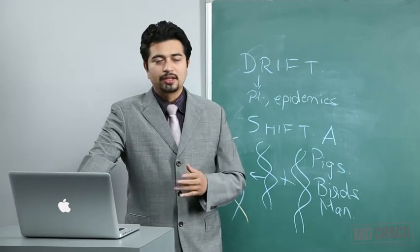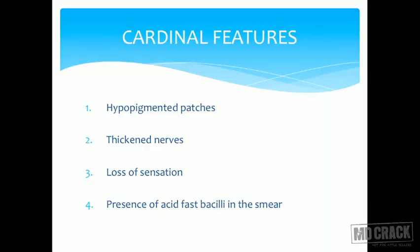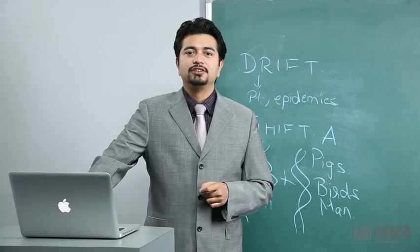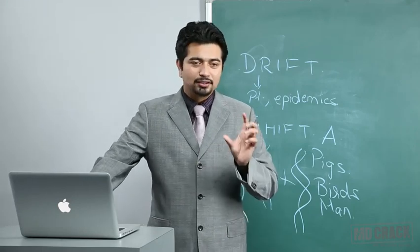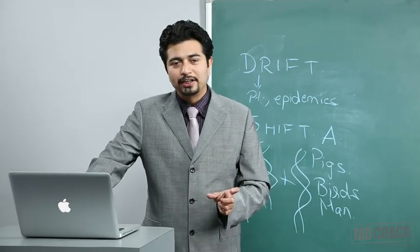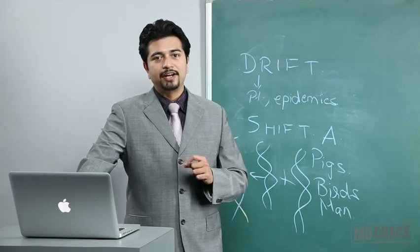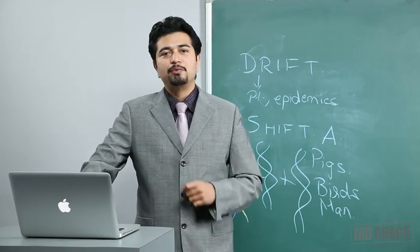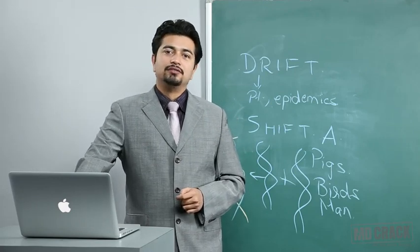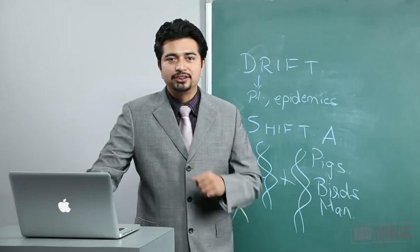The cardinal features of leprosy — highly testable — are: hypopigmented patches, thickened nerves, loss of sensation in the area of the nerve, and presence of acid-fast bacilli in smears. Mycobacterium leprae is related to Mycobacterium tuberculosis — both are mycobacteria, sharing many properties including mycolic acid content. A person who has had tuberculosis may have a positive leprosy test due to shared antigens.